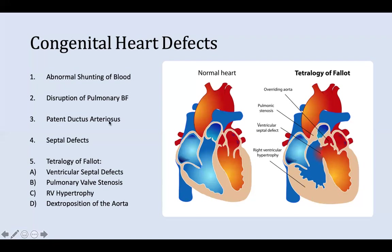Patent ductus arteriosus normally closes around two days after birth. Blood shifts from the left higher systemic pressure to the right lower pulmonary pressure. The murmurs are detected continuously through systole and diastole. This leads to left heart hypertrophy and a widened pulse pressure, which is diagnosed with a radiograph. The two types of septal defects are atrial and ventricular septal defects, ranging from small asymptomatic openings to large symptomatic openings, usually causing left to right shunting and dilation of the heart chambers.